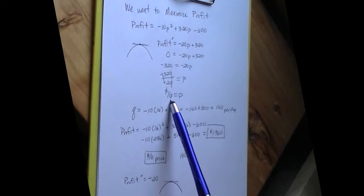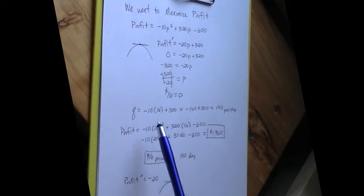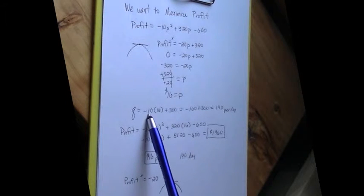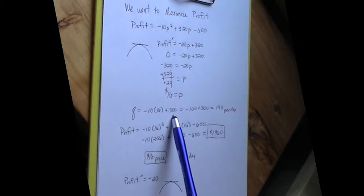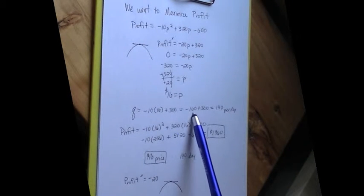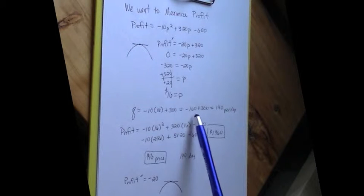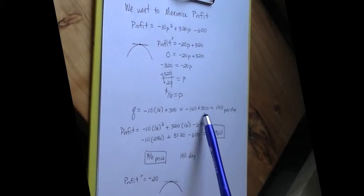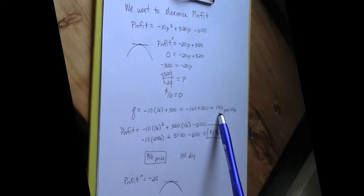Let's find how many will actually sell at that price. So remember, quantity was negative 10 times price plus 300. So negative 10 times $16 is negative 160. Negative 160 plus 300 is 140. So I'll sell 140 per day if I price them at $16.